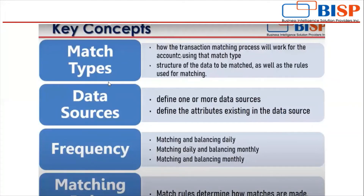Key concepts: match types define how the transaction matching process will work for accounts, including the structure of the data to be matched and the matching rules. Data sources — one or more — have attributes like column headings in Excel, such as invoice, customer name, amount, debit amount, and credit amount, defined for each source like receivables and payables. You also define the frequency — for example, match and balance daily, or match daily and balance monthly.